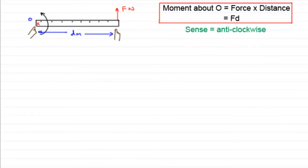And what units do we use? Well, we're multiplying a force, which is in newtons, with a distance in meters. So we talk about the units of that moment as being measured in newton meters, or Nm for short.